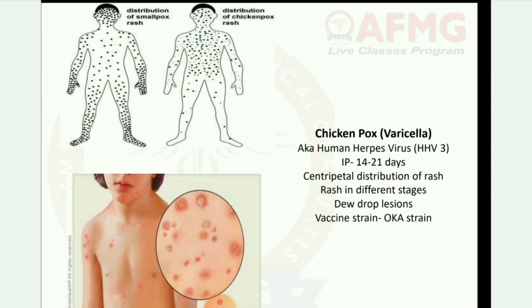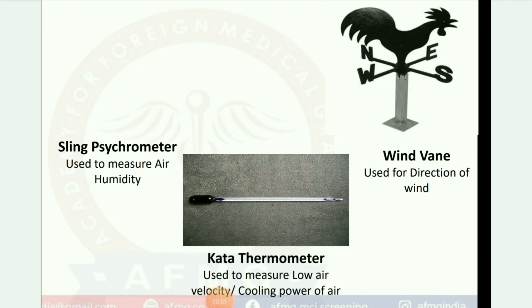Next image: chickenpox, caused by varicella zoster virus (also known as human herpesvirus 3, HHV3). First image shows distribution of smallpox rash; second shows chickenpox rash. Incubation period: 14 to 21 days. Features: centripetal distribution of rash, rash in different stages, dewdrop lesions. Vaccine strain: Oka strain.